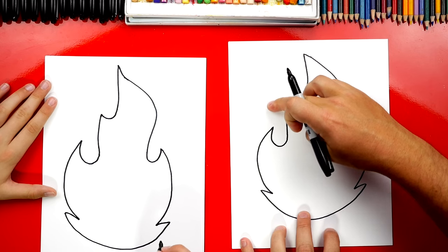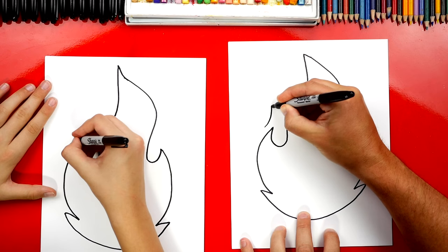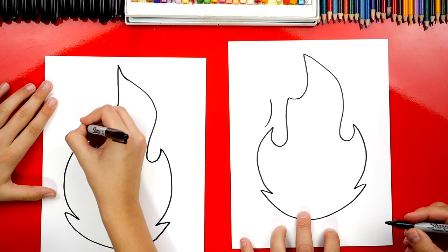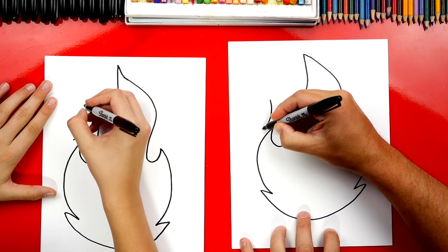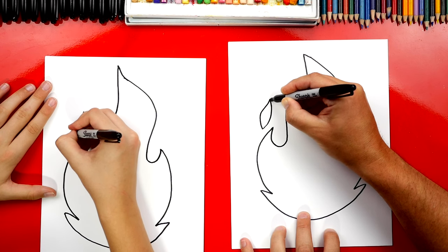Now there's one more little piece of fire that's floating over here on the side. So we're going to draw a curve up and then on the outside, we're going to draw an S curve. We'll curve one direction and then curve back the other direction.